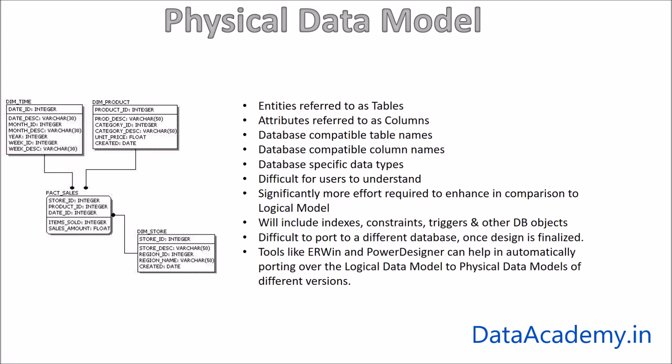So to summarize, a data model is a simple diagram that shows the list of tables and the relationships. There are three stages in designing a data model: we start with conceptual, which is highly abstract, then we move over to the logical data model which has entities and attributes,